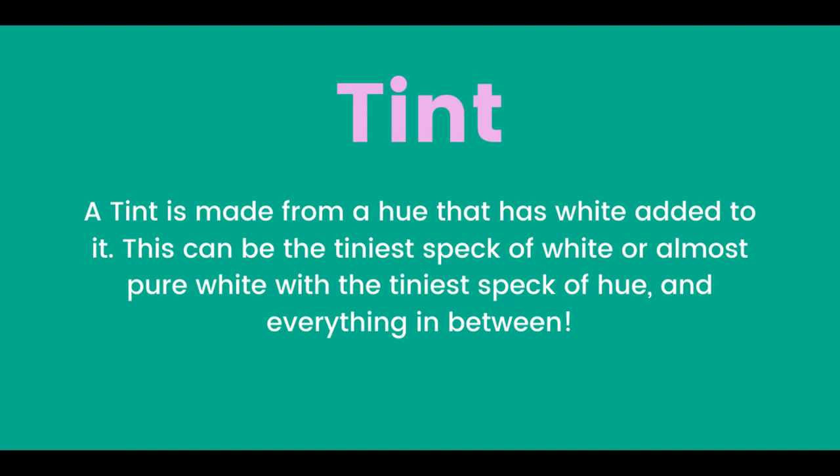A tint is made from a hue that has white added to it. This can be the tiniest speck of white or almost pure white with the tiniest speck of hue, and everything in between.